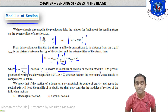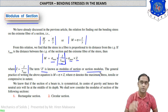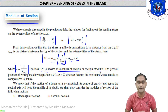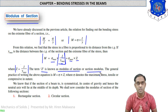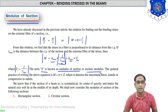What is the unit of section modulus? Section modulus Z = I/Y, where I (moment of inertia) is in mm⁴ and Y is a distance in mm. So mm⁴ divided by mm gives mm³. The unit of section modulus is mm³, or m³, or cm³.